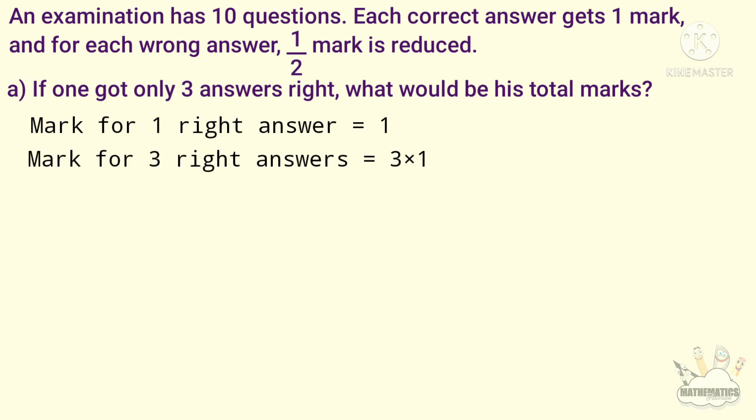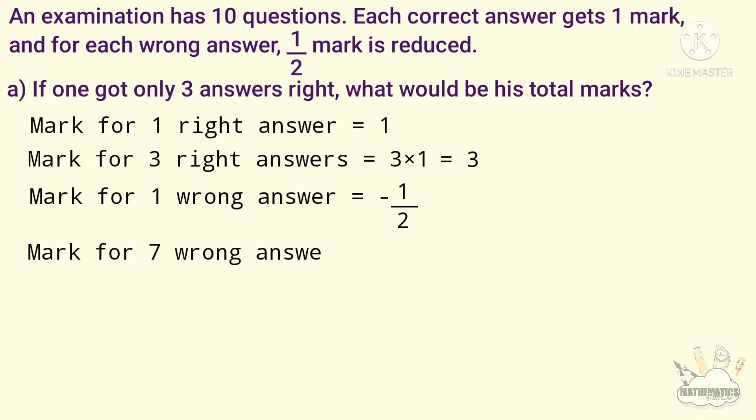Mark for 3 correct answers: 3 into 1, that is 3. Mark for 1 wrong answer is minus 1 by 2, because one wrong answer takes away half a mark. So mark for 7 wrong answers is equal to 7 into minus 1 by 2.